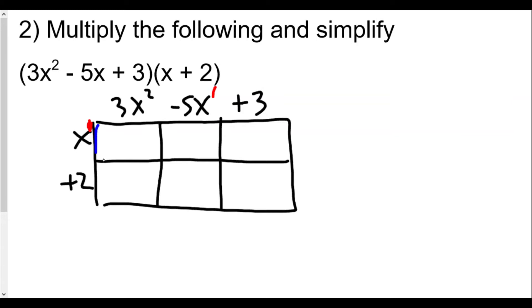Now I'm going to multiply x to the first power times 3x², and that's going to be 3x³ because x² times x to the first is x³. Now we're going to multiply the -5x times x, and that gives us -5x². Now multiply the 3 times the x and we get +3x.